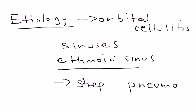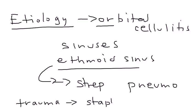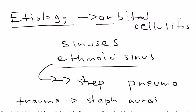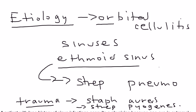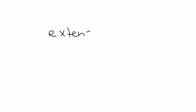There's another reason you can get orbital cellulitis, and that is trauma. If there's trauma and an infection arises from it, the bugs are different — either Staph aureus or Strep pyogenes. So those are the two big reasons: a local trauma that causes an infection, or a sinus infection that leads to orbital cellulitis.